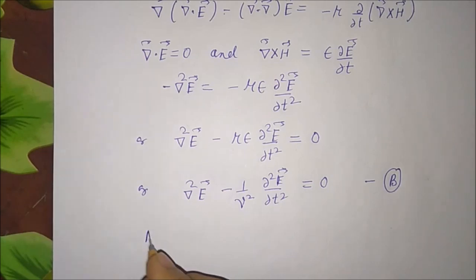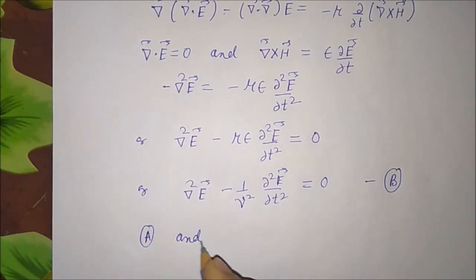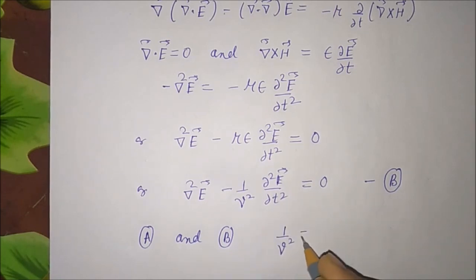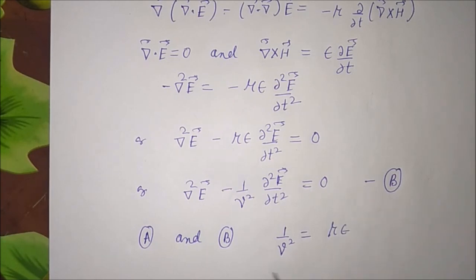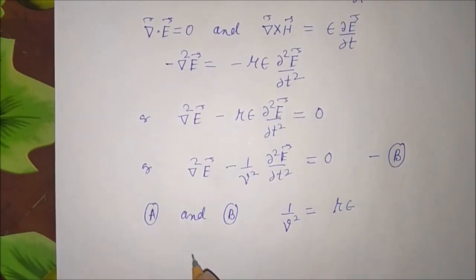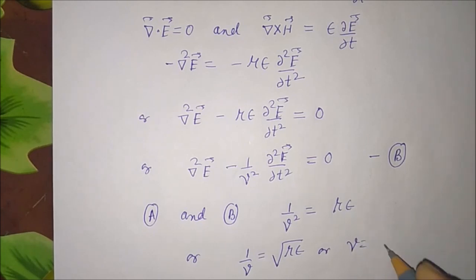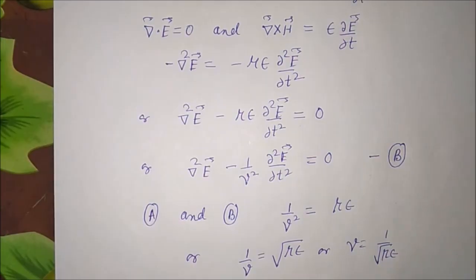In both equation A and equation B, 1/v² equals mu epsilon, or 1/v equals the square root of mu epsilon, or v equals 1 over the square root of mu epsilon.